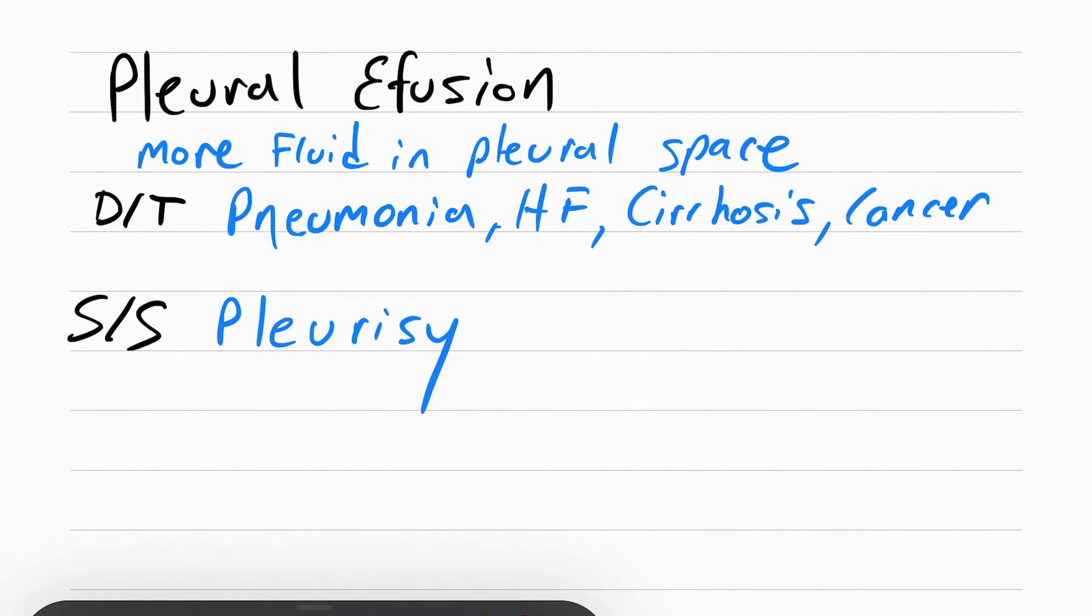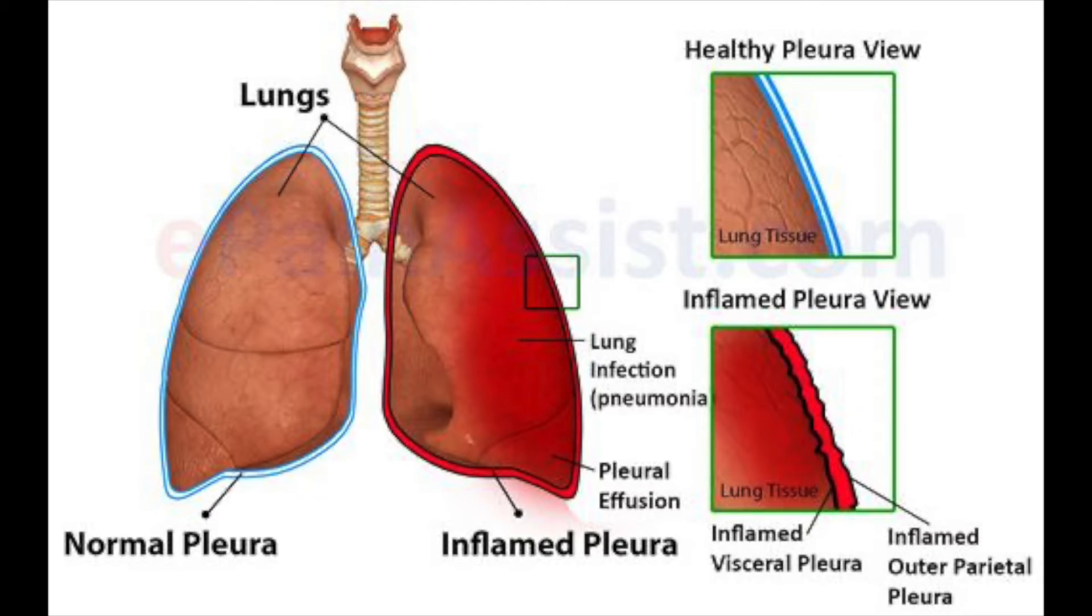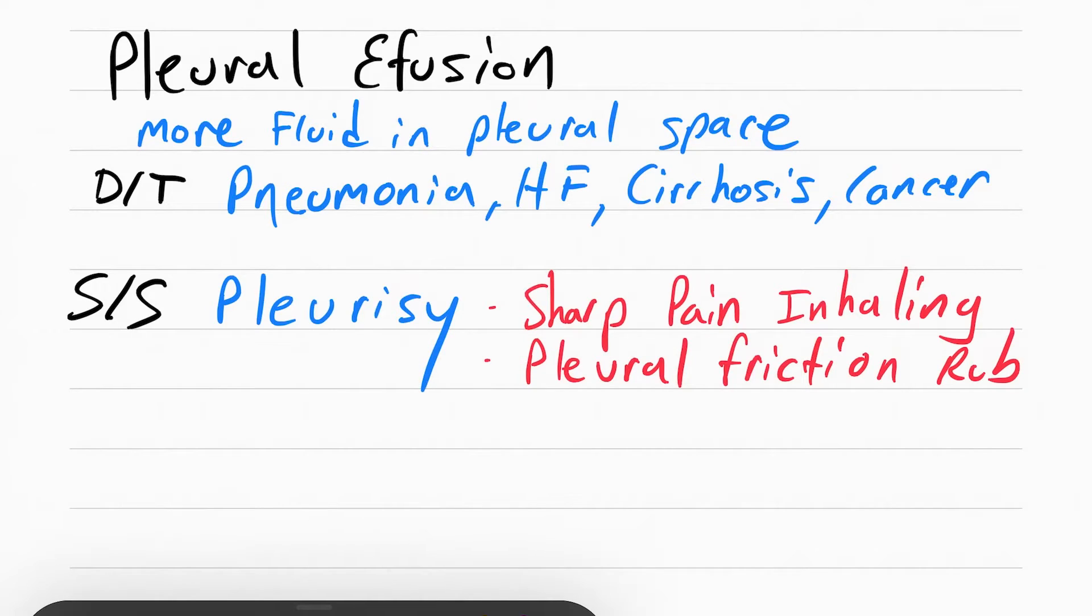The main sign and symptom of pleural effusion is something called pleurisy or pleuritis. This is a sharp pain when inhaling. The reason this happens is because the two pleural layers are inflamed and they're rubbing each other, which leads to the pain. The patient can also have pleural friction rub, which is when you auscultate their breath sounds you'll hear a harsh grating sound. This is the pleural layers rubbing against each other because they're inflamed.